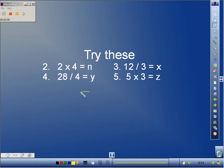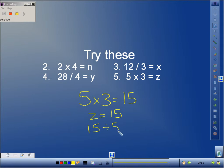Our last problem here is 5 times 3 equals z, so we'll do 5 times 3 is equal to 15. Our variable of z is equal to 15. Our inverse operation would be 15 divided by 5 equals 3. And you might be wondering, could I do 15 divided by 3 equals 5? Absolutely, it's your choice as to how you want to do your inverse operation.